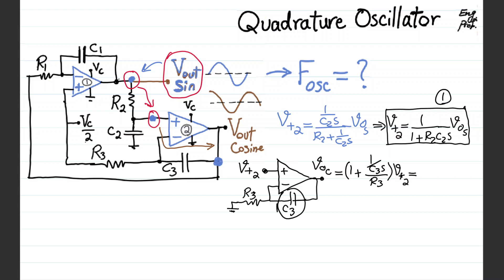Simplifying, this becomes (1 + R3·C3·S) / (R3·C3·S) times V+ of op-amp 2. This is equation 2, relating V+ to Vout cosine.